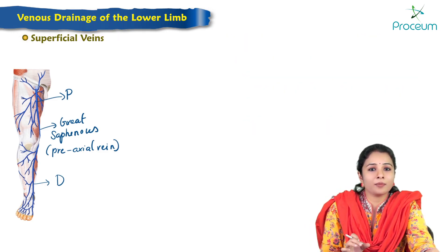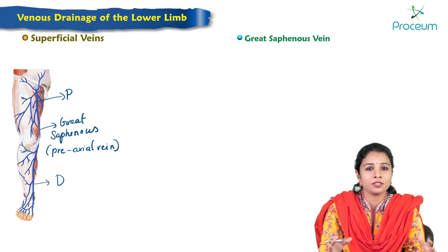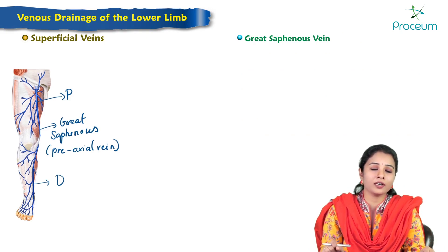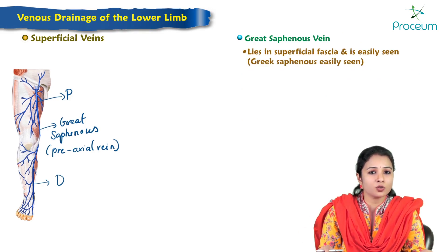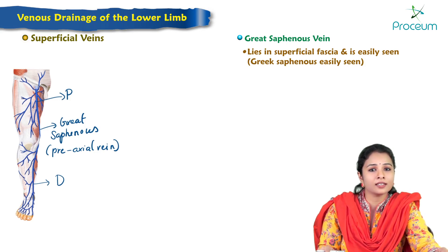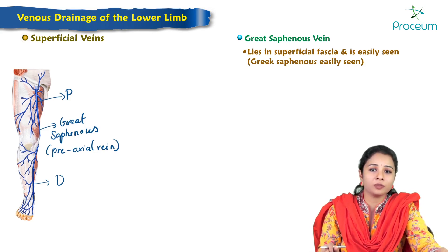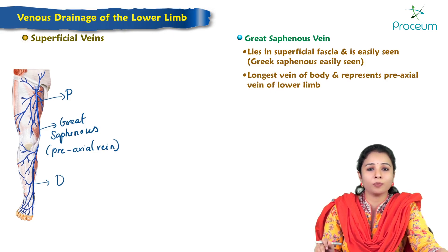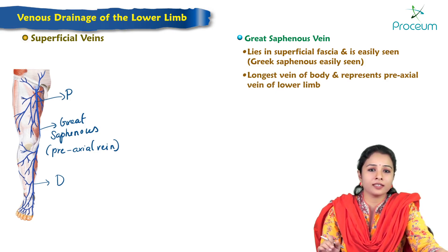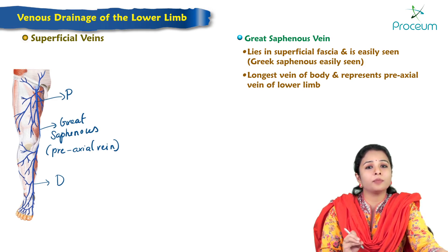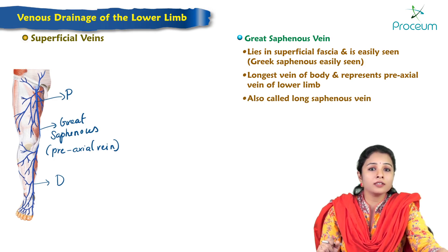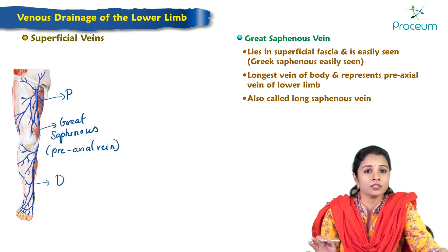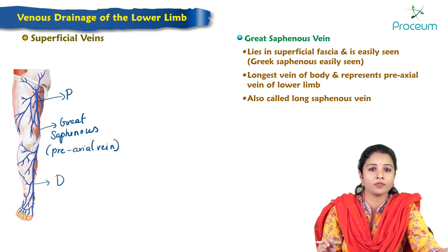Let us discuss the great saphenous vein. As the name suggests, it is a very long vein lying in the superficial fascia, easily seen in fair-complexioned people. The great saphenous vein is the longest vein of the body, represents the pre-axial vein of the lower limb, and is also called the long saphenous vein.